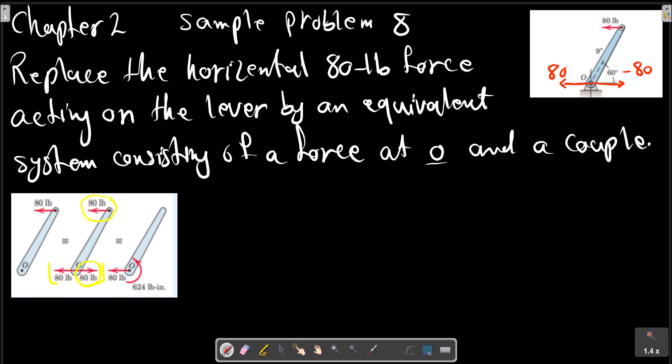In this picture, M equals 80 multiplied by the vertical distance. The vertical distance is 9H multiplied by sine 60.